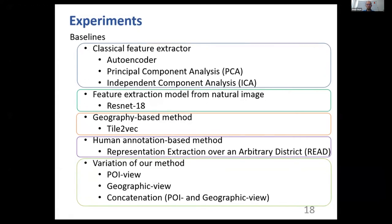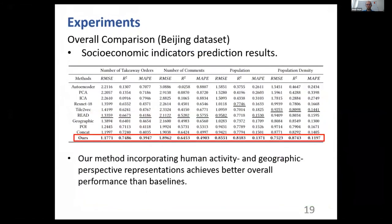The READ method is a semi-supervised model trained on a small subset of human-labeled satellite images and a large number of unlabeled images. The last three methods are variations of our method. Our method with the attentional fusion model combining human activity information and geographic information outperforms all the baseline representations when predicting various kinds of socioeconomic indicators.